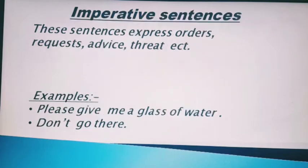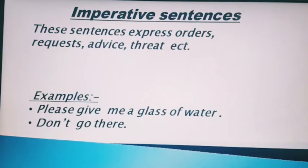Now comes the third one: imperative sentences. These sentences express orders, requests, advice, threat, etc. To in sentences mein kya-kya hota hai? Aap kisi ko order de sakte hain ya koi aapko order de sakta hai. Kisi cheez mein request ho sakti hai. Aapko advice di ja sakti hai. Ya phir aapko threat — matlab dhamki — di ja sakti hai.